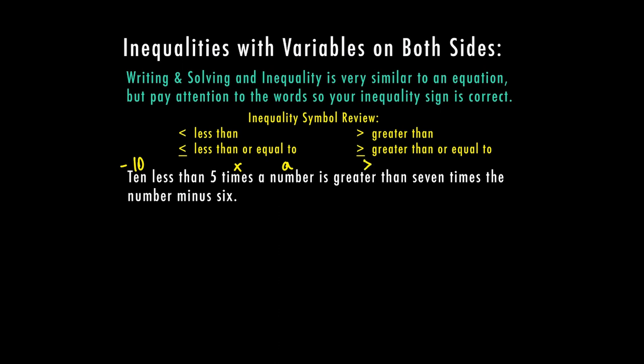It's greater than seven times the number — and since it says 'the number,' it's got to be the same number, which I put an A for, minus six. We want to be careful: I wrote a multiplication sign with an X above the word 'times' just to note what that means, but we don't want to write it with an X because we also have the variable A and this could get confusing. So our problem is: 5A minus 10 is greater than 7A minus six.